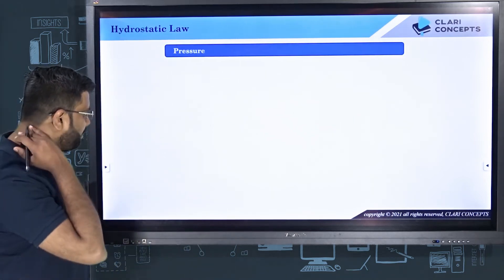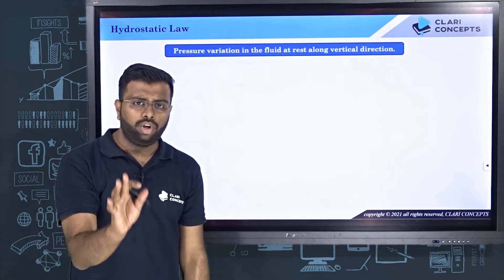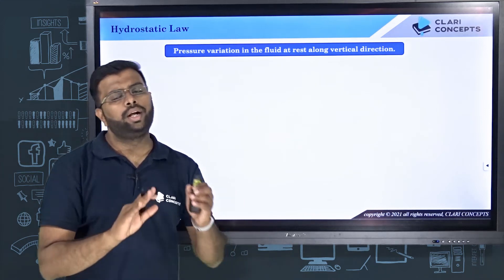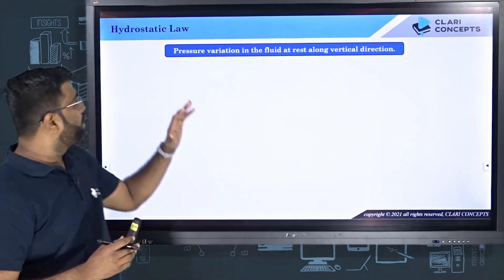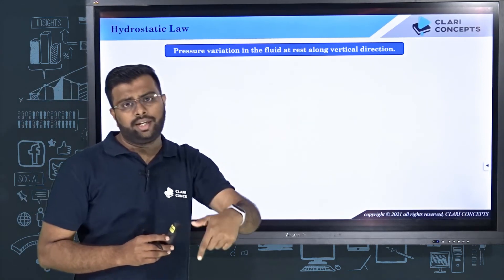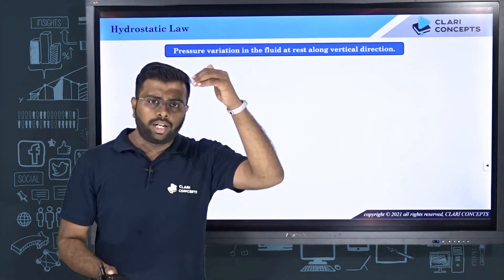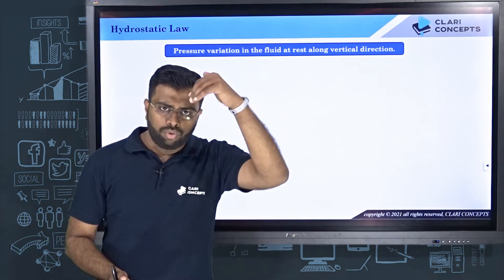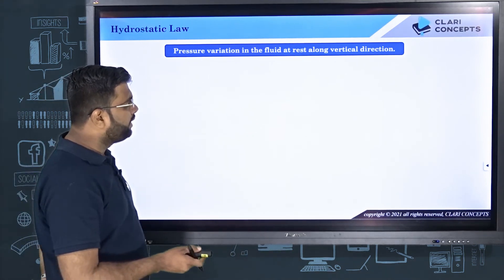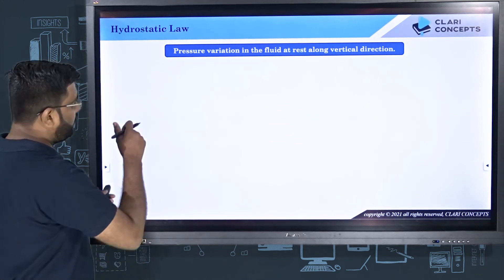If I talk about hydrostatic law, basically it deals with the variation of pressure along vertical directions mainly in a fluid at rest. Hydrostatic law deals with pressure variation in a fluid at rest along the vertical direction. Whenever a fluid is at rest, a large fluid body is at rest, what happens to the pressure when you move down or when you move up? Pressure variation and its behavior in vertical direction is basically explained by hydrostatic law.